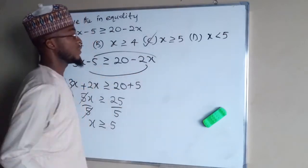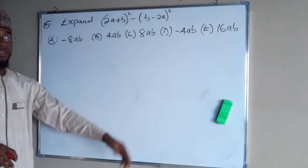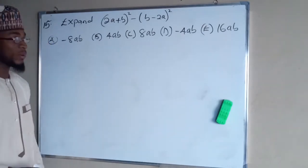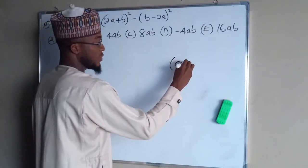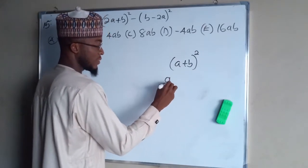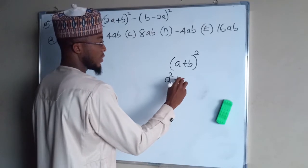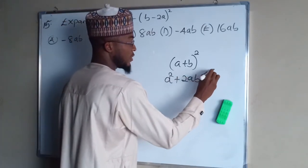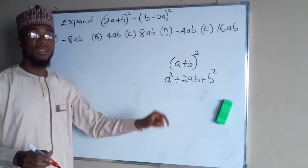Question number 15 says expand these quantities. By the binomial expansion law using Pascal's triangle, if you have (a + b) squared, this equals a squared plus 2ab plus b squared. We apply this law to each of the given quantities.